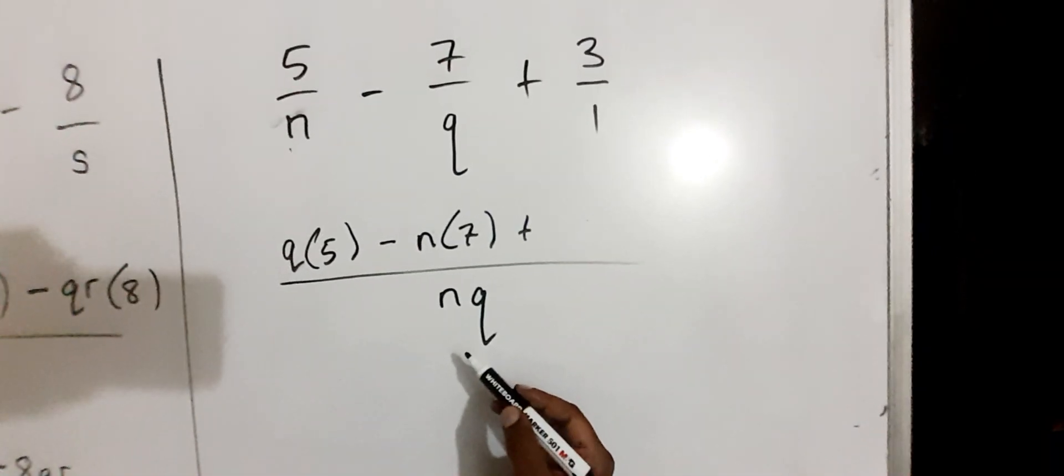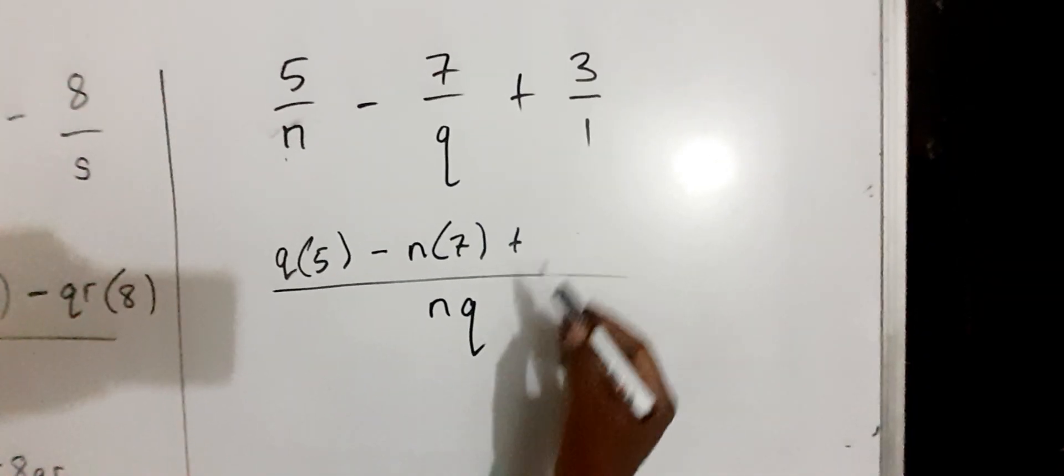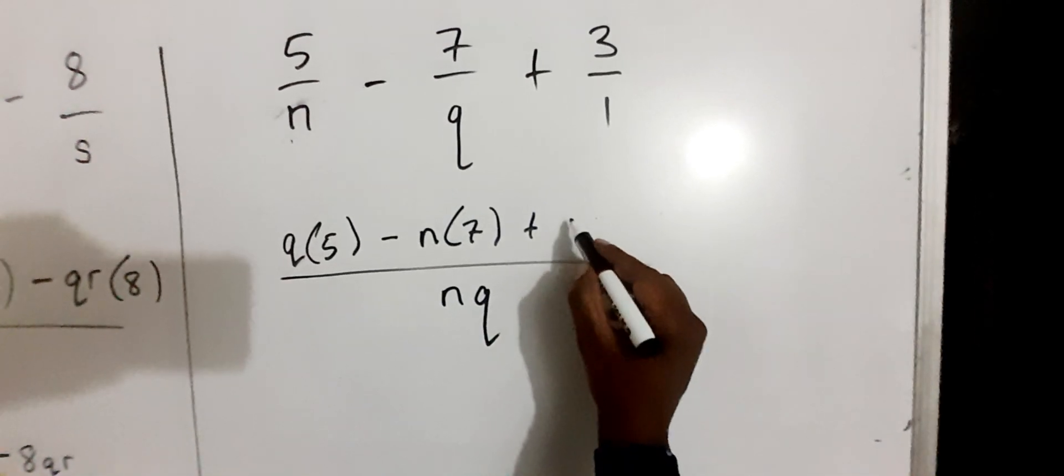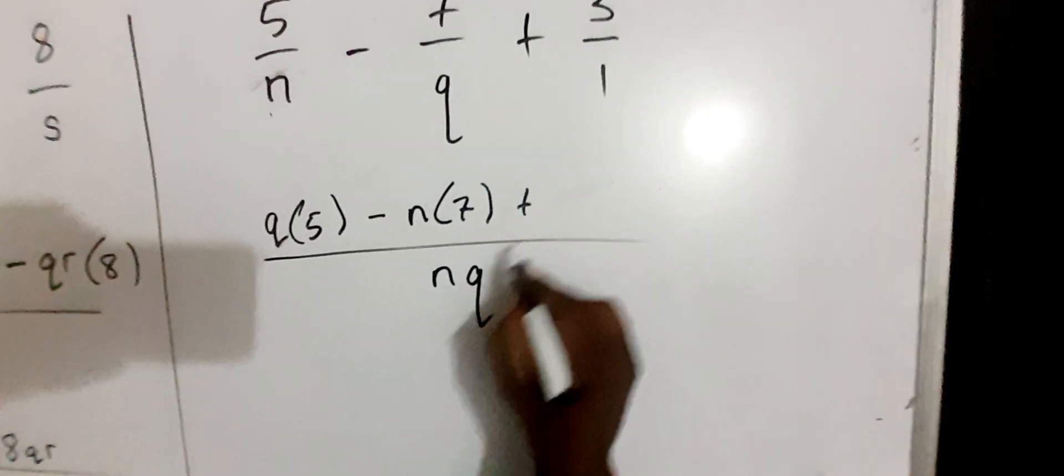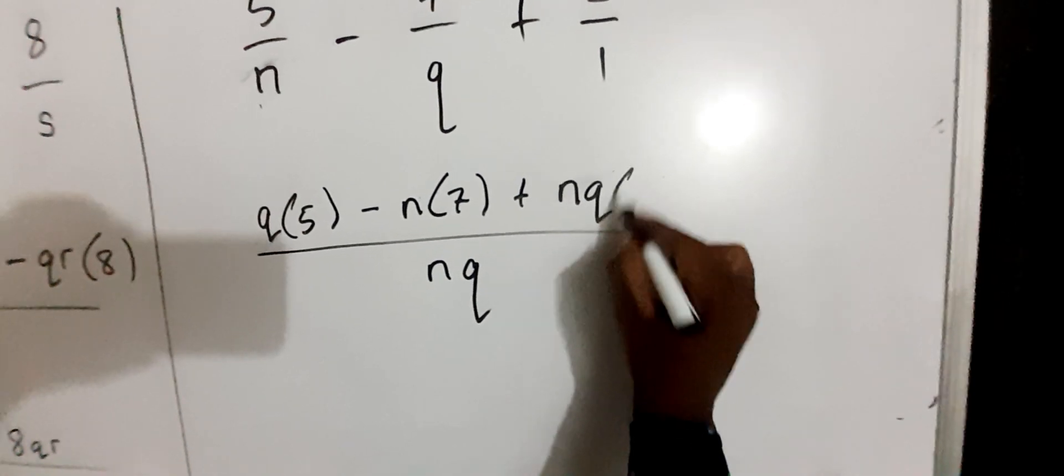Remember, 1 into any number is just that number. So 1 into this, it's going to be 3. We can just say NQ times 3 if you want. 1 into NQ is NQ, brackets 3.